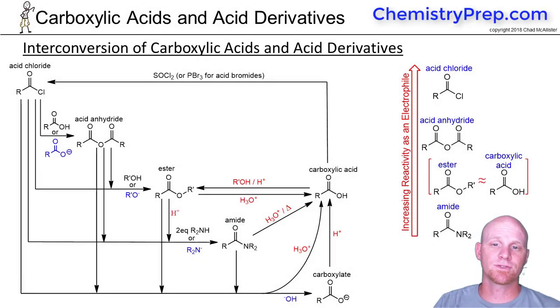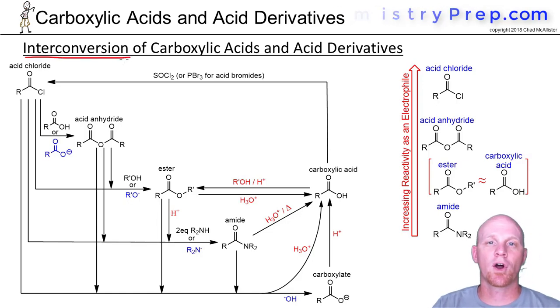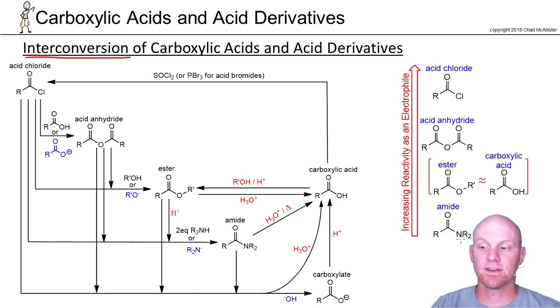One of the largest parts to nucleophilic acyl substitution involves the interconversion of all these different carboxylic acid derivatives. We've already looked at the trend in reactivity - acid chlorides being the most reactive, amides being the least. We'll see that carboxylates are even lower than the amides, but you can directly turn them into a carboxylic acid by simply protonating, so we just kind of ignore them a little bit.